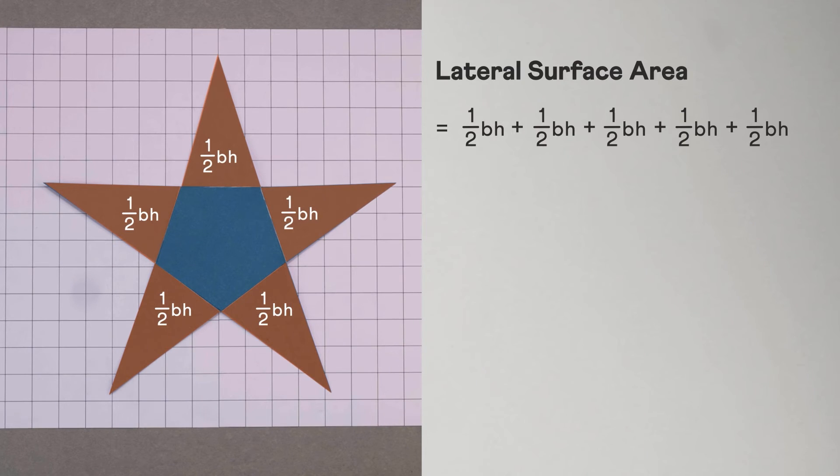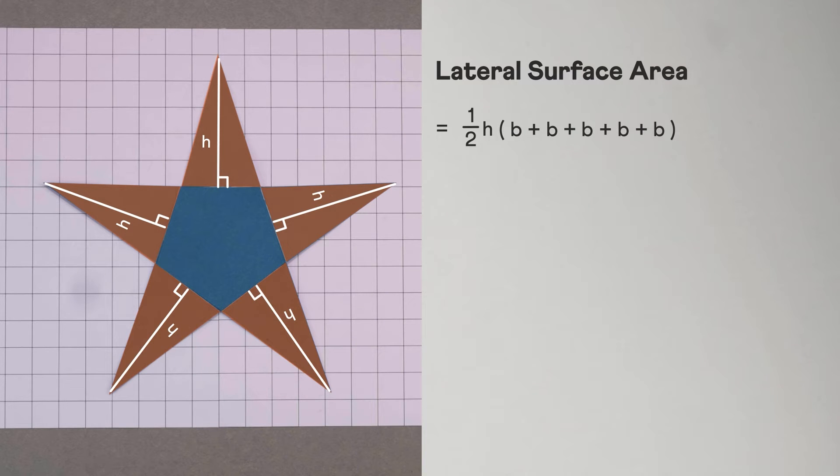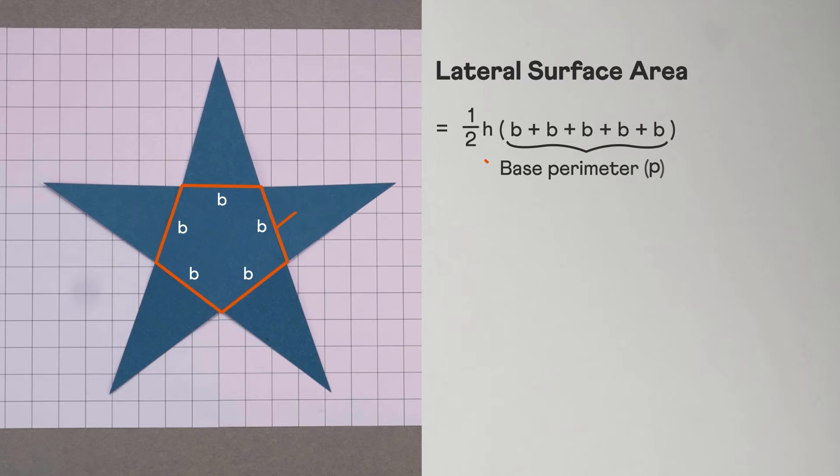Let's add them. Since it is a regular pyramid, the height of each triangle must be the same. We can factor out half times height in this sum. Now the sum of all these bases is just the perimeter of the pyramid's base. So we get the lateral surface area of a pyramid as half times the perimeter of the base times height.